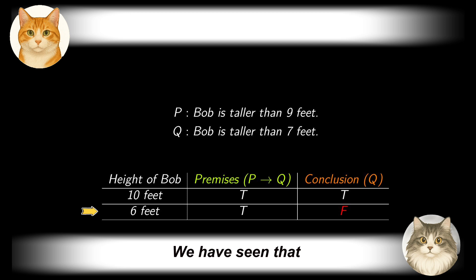We have seen that with the truth preservation in view, a rule of inference should not be arbitrary. Otherwise, true premises may lead to a false conclusion.